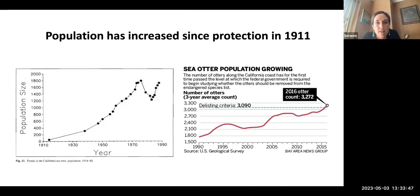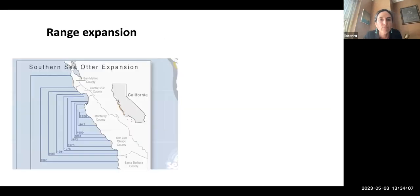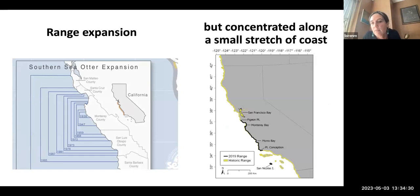Populations of southern sea otters have increased since protection in 1911, responding positively to protection and continuing to grow to something around 3,000 individuals today. As the population grew in numbers, it also expanded up and down the coast — from its 1938 location in Monterey County and Big Sur to now inhabiting the coast from just south of San Francisco to Point Conception in Santa Barbara. But this range is still concentrated along a relatively small stretch of central California coast compared to its historical range all up and down the California coast.